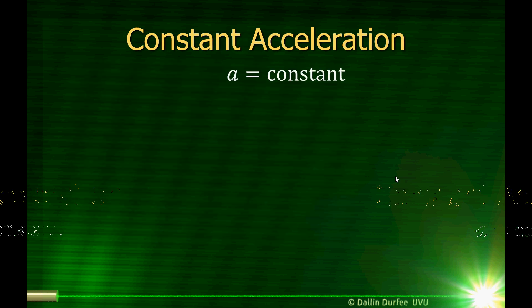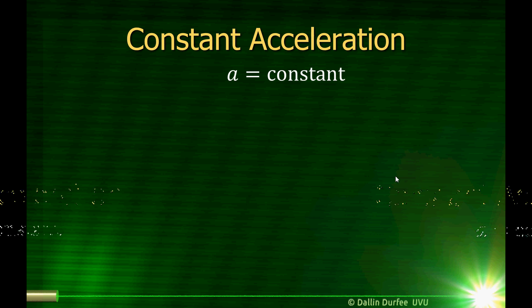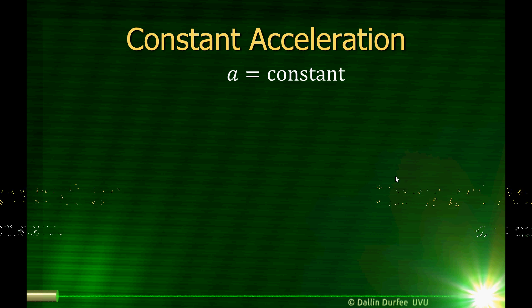So now let's talk about what happens if the velocity is changing, but the acceleration is constant. Very often we have systems where acceleration is constant. If I have an electron accelerating in a constant electric field, for example, or near the surface of the earth, the acceleration of an object due to gravity is constant. So let's consider what happens if the acceleration is constant.